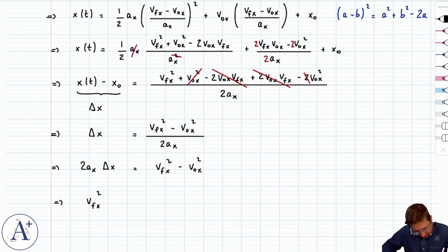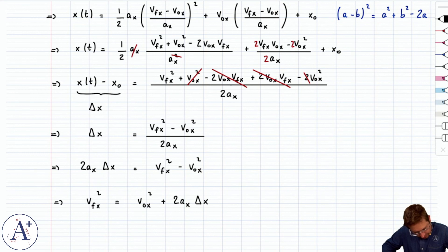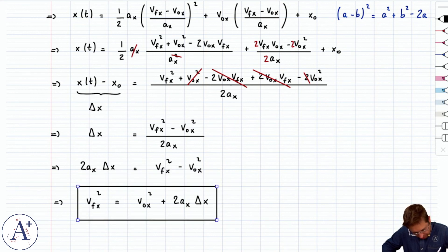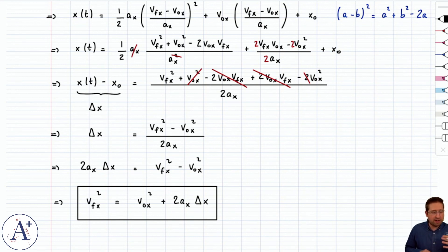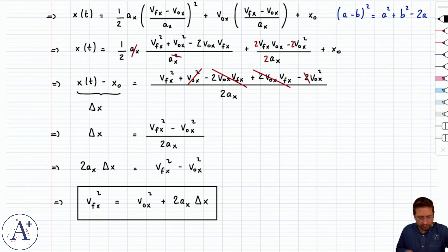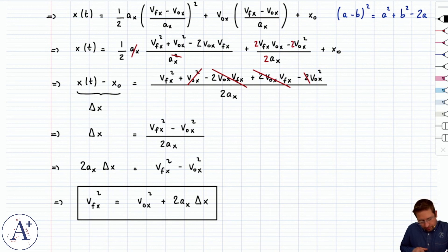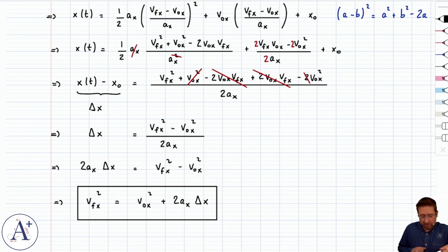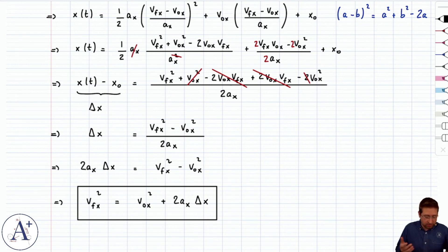Multiplying both sides by 2aₓ gives the final result: vfₓ² = v₀ₓ² + 2 aₓ Δx. Time is entirely gone from this equation. It's a very useful equation to relate two points in the motion and ask: after a given displacement, how do the speeds relate? The terms are squared, so you get speed — not signed velocity — telling you speed squared equals initial speed squared plus 2aₓ times displacement Δx.